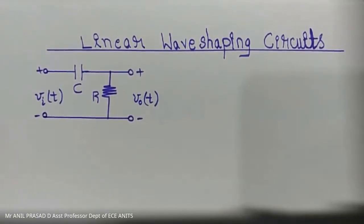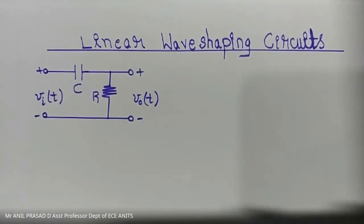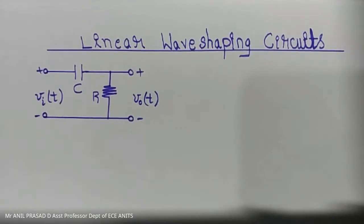We have come to know that the RC low pass filter circuit is one of the circuits we study in linear wave shaping circuits. We have discussed it when the input is a step input, a sinusoidal input, a pulse input, a square wave input, and a ramp input. We will now wind up the RC low pass filter circuit and move on to the RC high pass filter circuit.